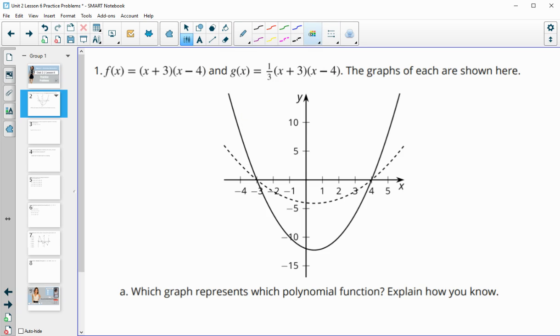So we know that the number multiplied in front of the polynomial will impact the width or the height of the function. If this one that's out front is a 1 versus this one as a one-third, the one-third will be wider or a shorter distance from the x-axis than the 1. It'll actually be one-third the distance. So this dotted one is g of x, and then the solid one is f of x.